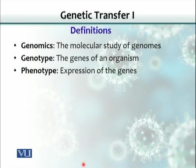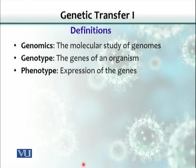Genomics is the study done at the molecular level dealing with nucleic acids. Genotype is the genes of an organism, and phenotype is the genotypic expression in the form of things that we observe, like the height of people, color of the skin, color of hair, and eyes — these are all phenotypes.